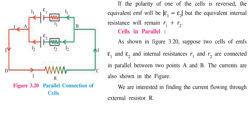But if the polarity of one of the cells is reversed, the EMF will be E1 minus E2, but the equivalent internal resistance will not change — it will still be R1 plus R2. So if you combine them with reversed polarity, the resultant EMF is the modulus of E1 minus E2, but resistance R1 plus R2 remains the same, because resistance is always present regardless of whether the polarity is similar or opposite.